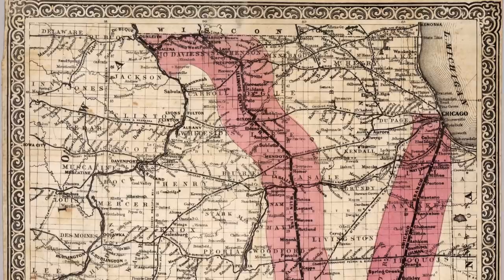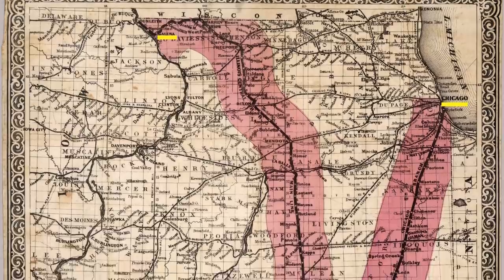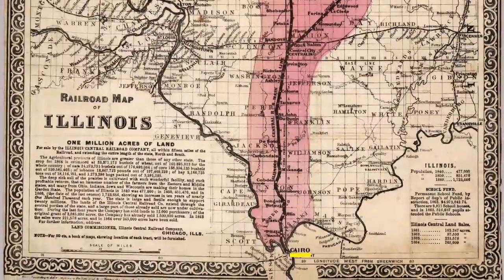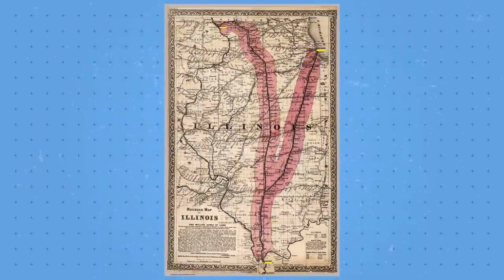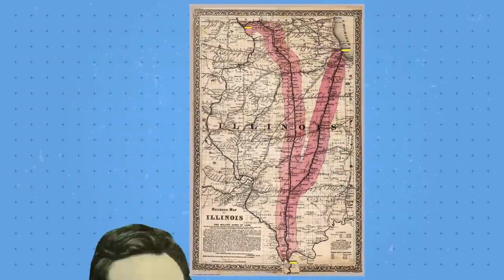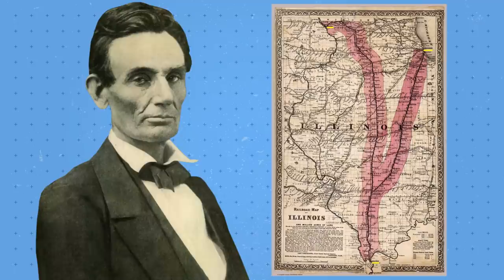The Illinois Central Railroad connected Galena and Chicago to Cairo, Illinois in 1856. At that time, it was the longest railroad in the entire world. During its construction, the railroad hired attorney Abraham Lincoln to represent them.